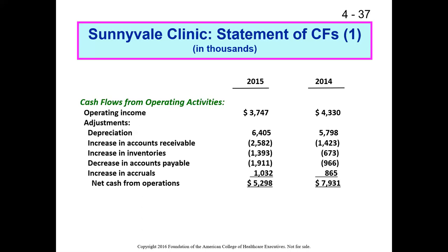An increase in accruals — like payroll accruing over time — means we've captured an expense in operating income that we haven't actually paid yet, such as half a pay period's pay. In this case, it understates the amount of cash we have on hand, because the operating income looks like we've already paid employees for that week of labor, but we actually haven't. So we add that back.